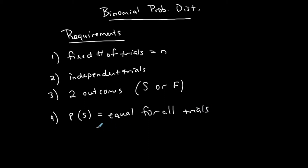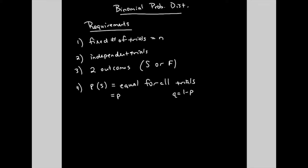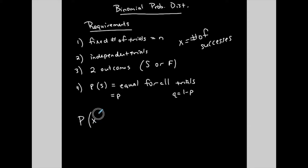The probability of success is represented by small p, and the probability of failure is the complement: one minus p, represented by lowercase q. Small p is probability of success, small q is probability of failure, and x represents the number of successes. If these requirements are met, you can calculate the probability of x successes in n trials using the binomial formula.